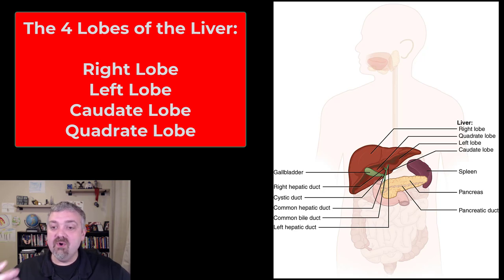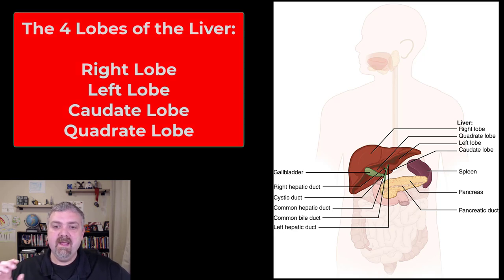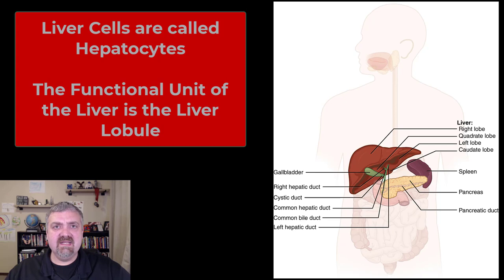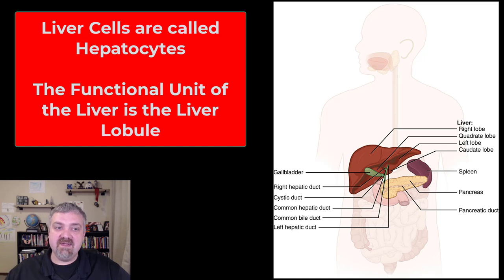The liver is really cool — it can regenerate. You can actually give somebody a part of your liver and it can regenerate. Very few structures can regenerate like the liver can, so I think it makes it kind of special. When I think of the liver, the first thing you should think of is liver cells. They're called hepatocytes, and we'll talk about some of the functions those cells perform.